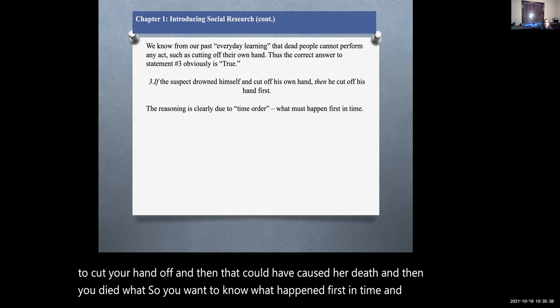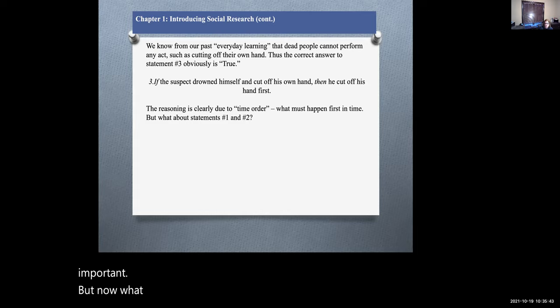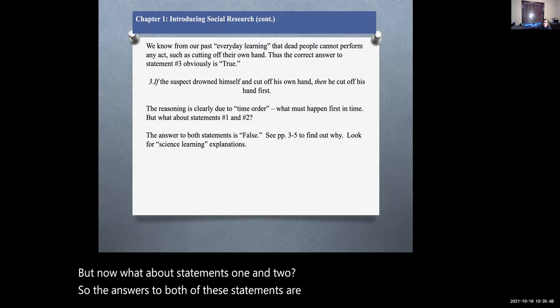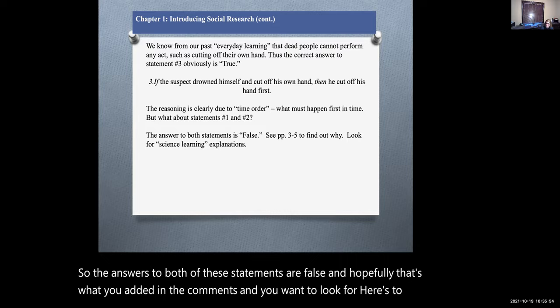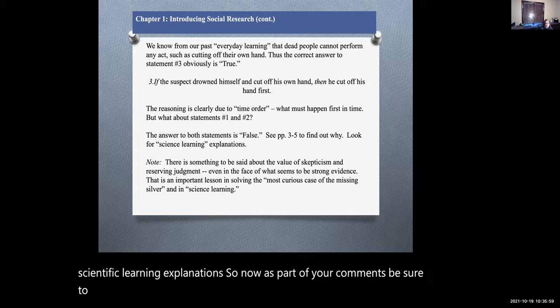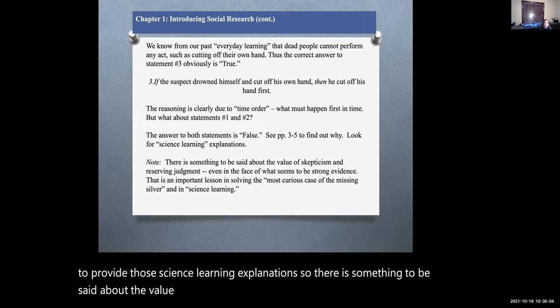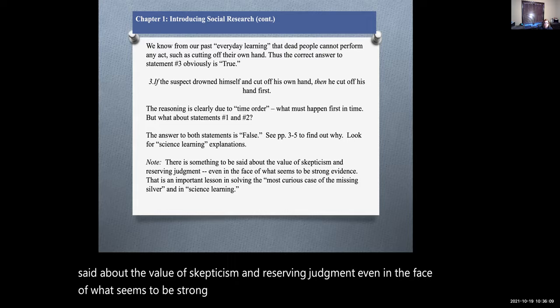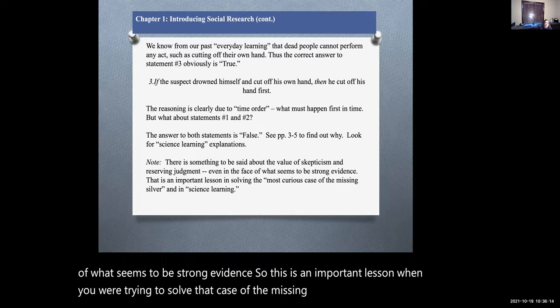Now what about statements one and two? The answers to both of these statements are false, and hopefully that's what you added in the comments. You want to look here to your scientific learning explanations. Now as part of your comments, be sure to provide those science learning explanations. There is something to be said about the value of skepticism and reserving judgment even in the face of what seems to be strong evidence. This is an important lesson when we're trying to solve that case of the missing silver, and that's why we use science learning.